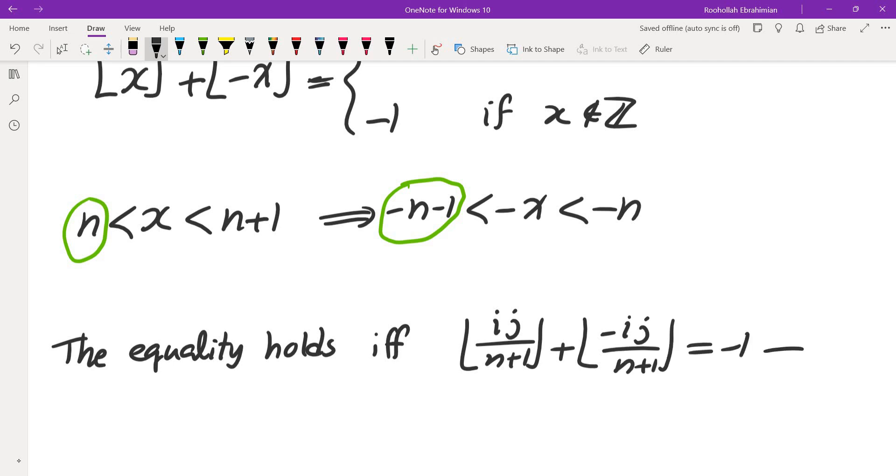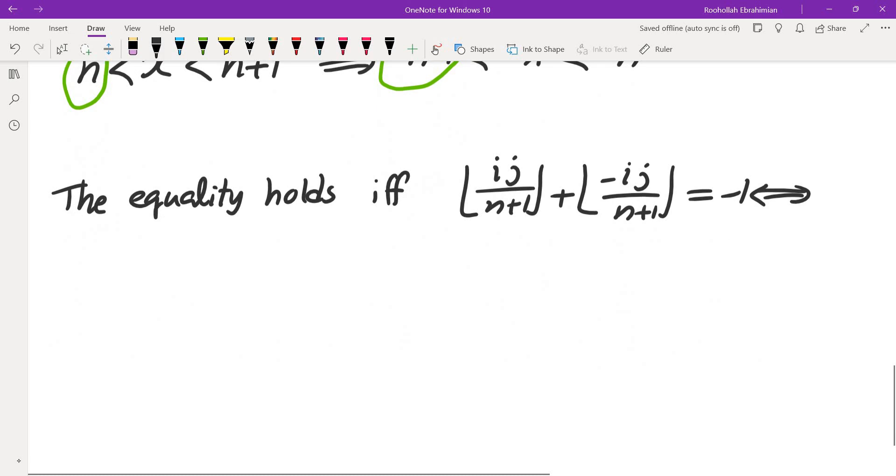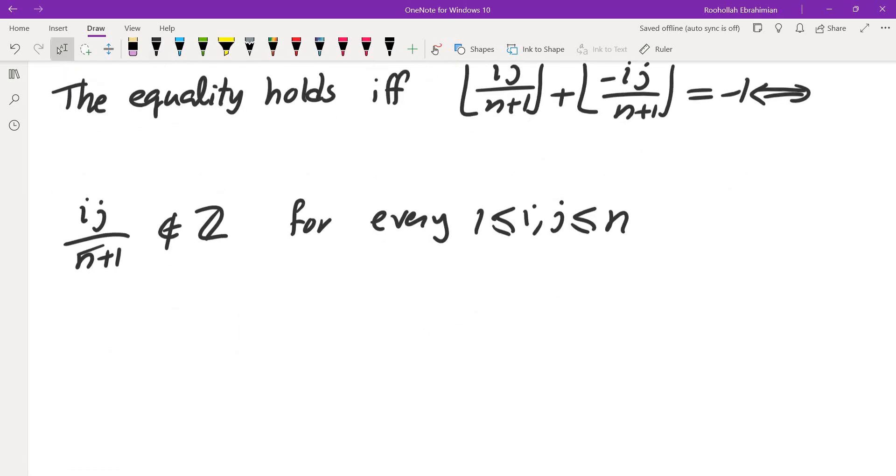When are these terms negative 1? This is true if and only if ij divided by n plus 1 is not an integer for every i and j between 1 and n. When does that happen? This is exactly when n plus 1 is a prime. So the answer is n plus 1 is a prime.